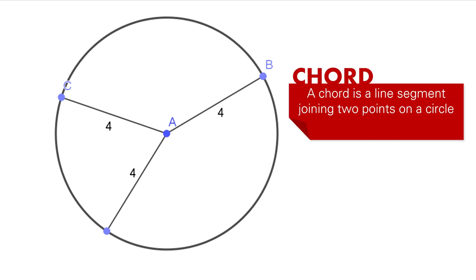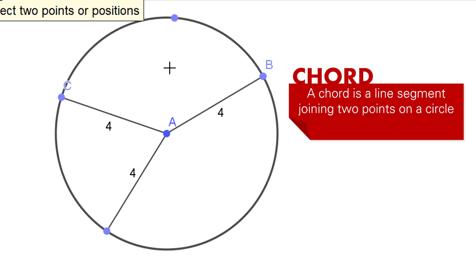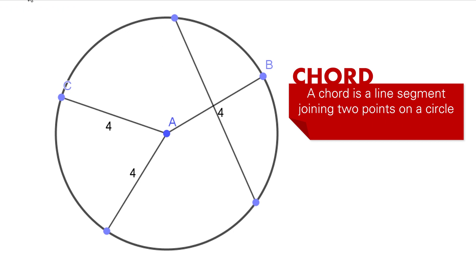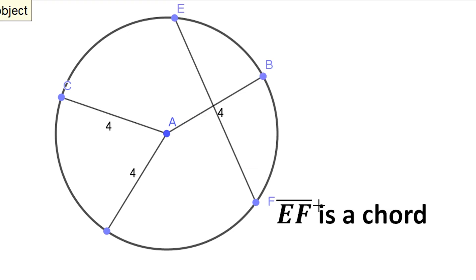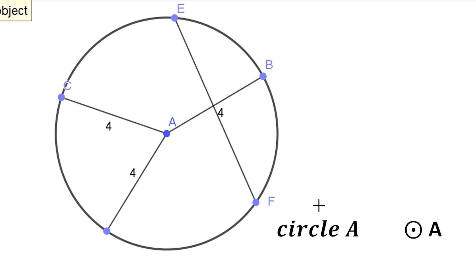A chord, on the other hand, is a line segment joining two points on a circle. For example, if you have a point E and another point F on the circle and you connect them, that is a chord — line segment EF is a chord of the circle. By the way, we name a circle by its center, so we call this circle A.